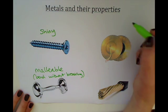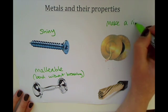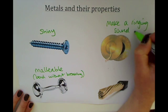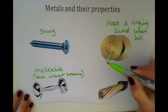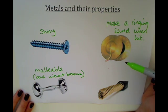Another property is that they make a ringing sound. We've just got a pair of symbols here to try and remind us of that fact—that if we hit a metal object, it will make a ringing sound, whereas a non-metal object would just make a dull sound when hit.